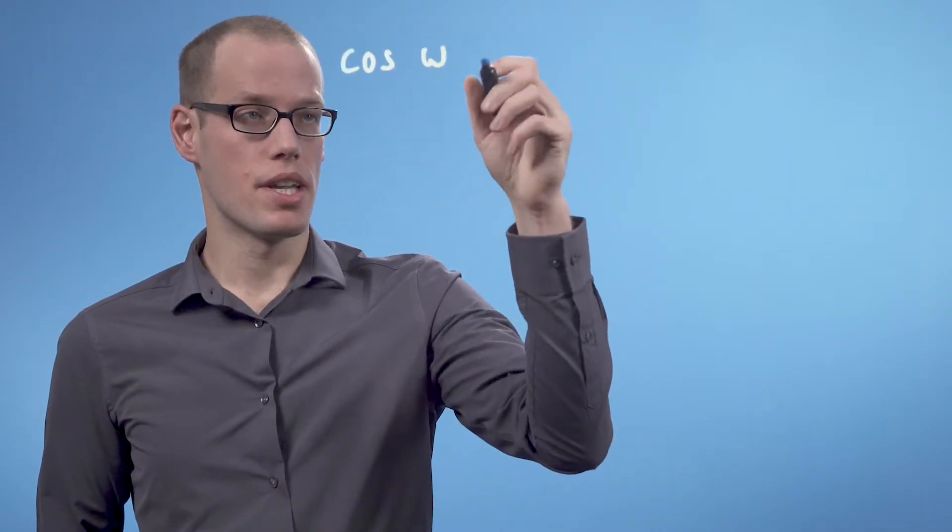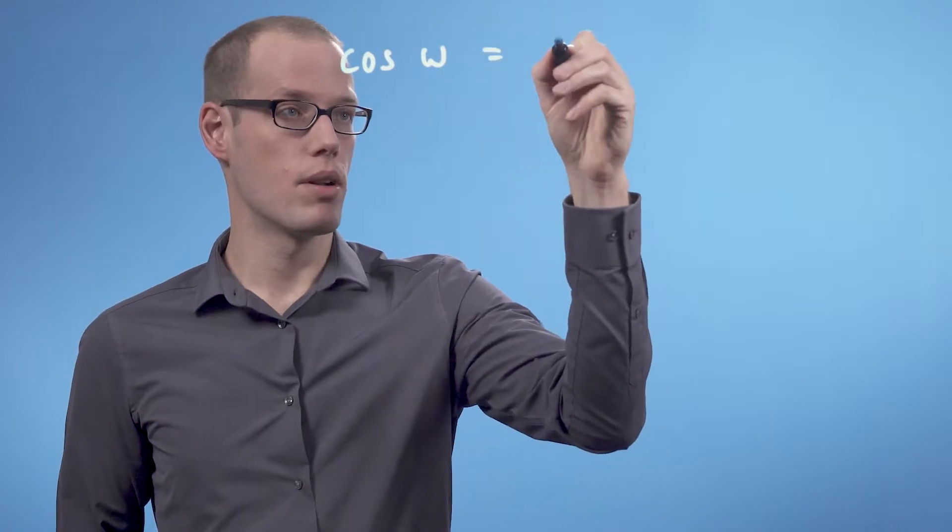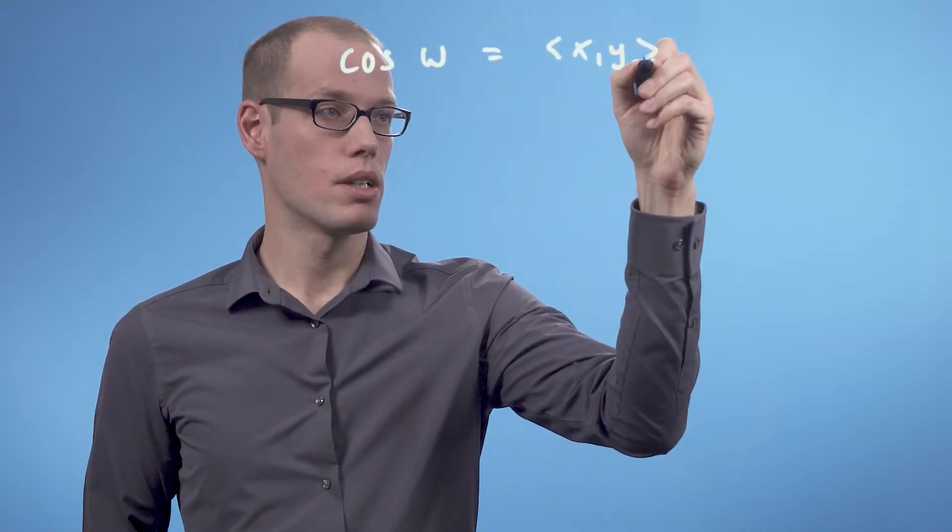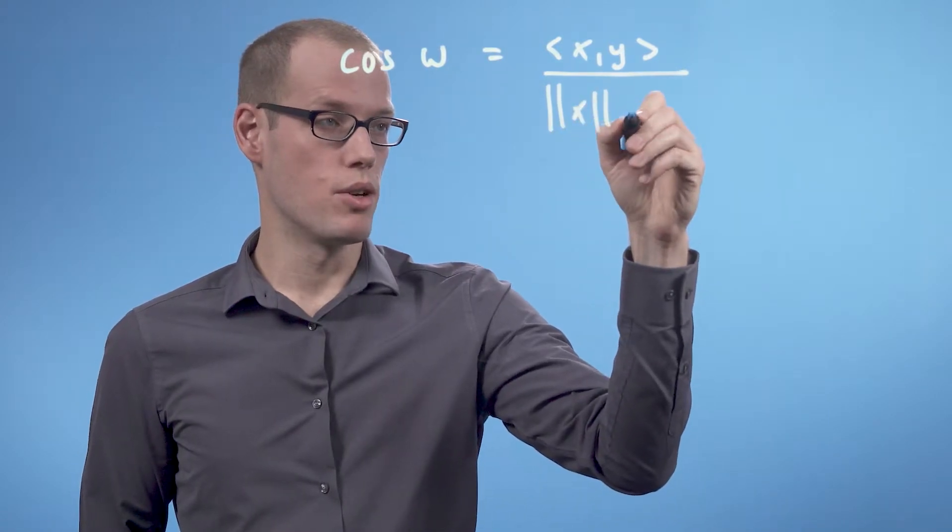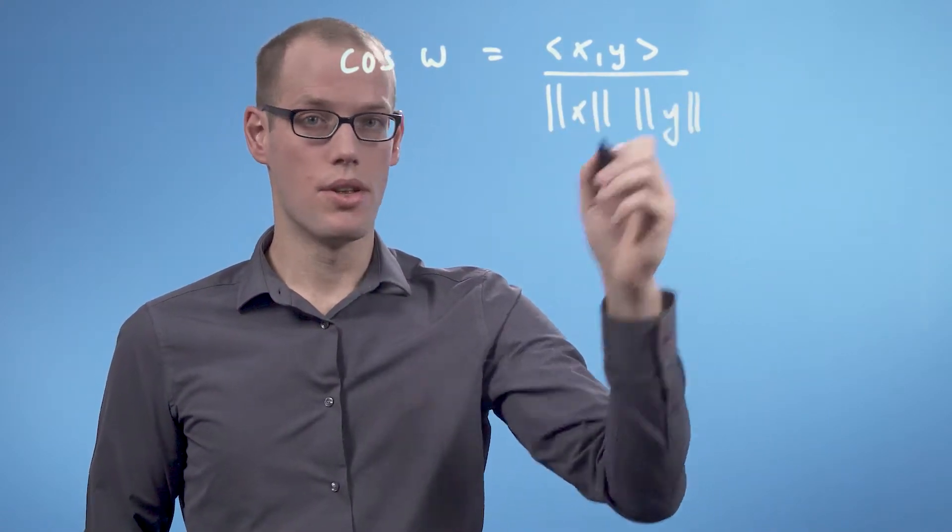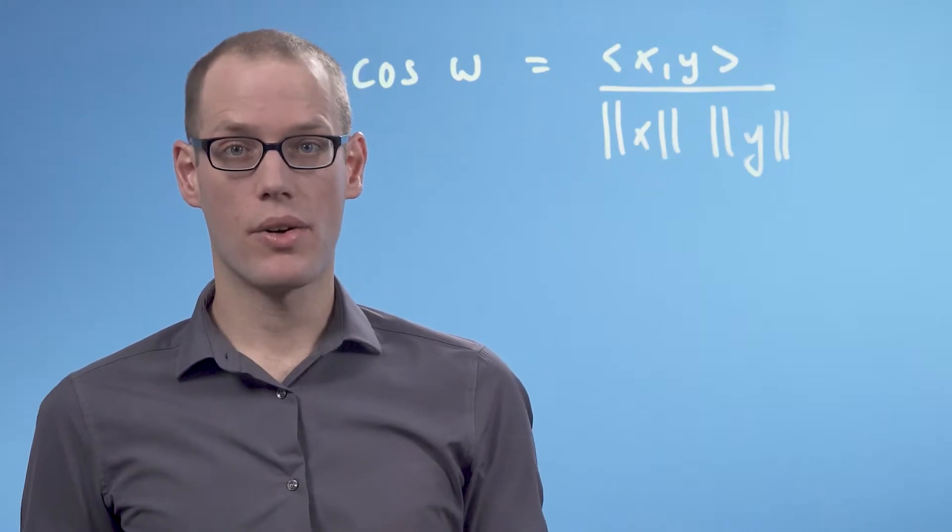Similar to lengths and distances, the angle between two vectors is defined through the inner product. If we have two vectors, x and y, and we want to determine the angle between them, we can use the following relationship. The cosine of this angle between the two vectors is given by the inner product between the two vectors divided by the norm of x times the norm of y. Let us have a look at an example.